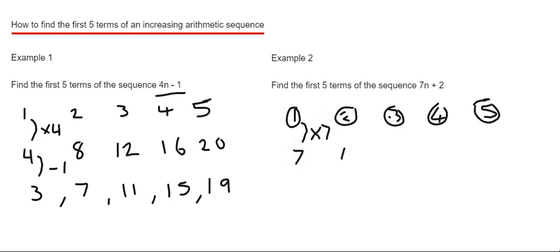we get 7, 14, 21, 28 and 35 and then we need to subtract 2.